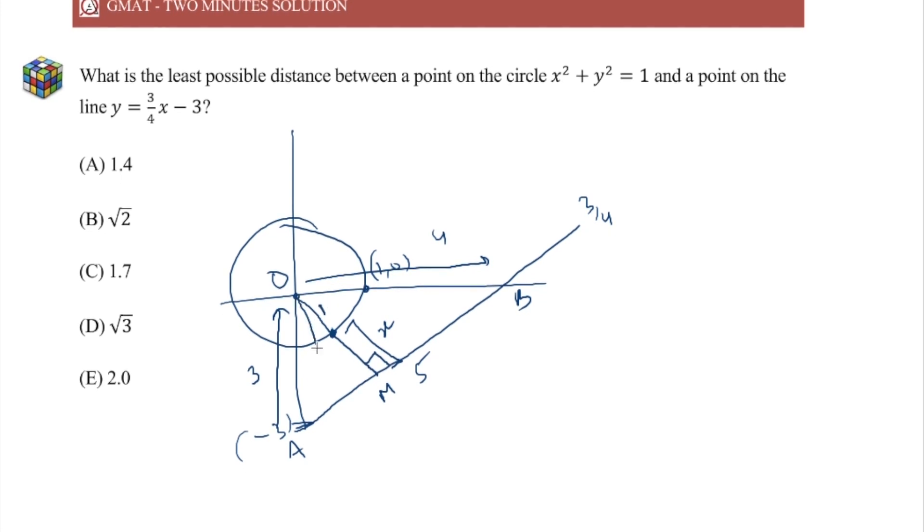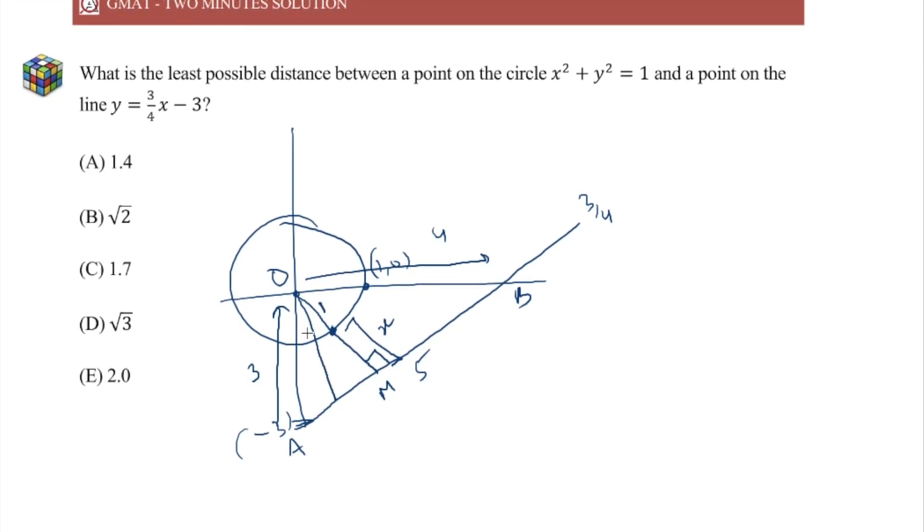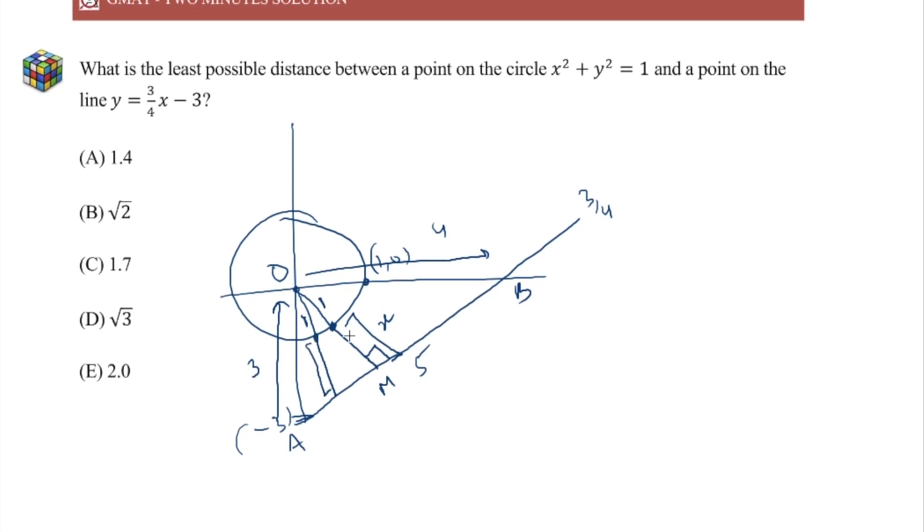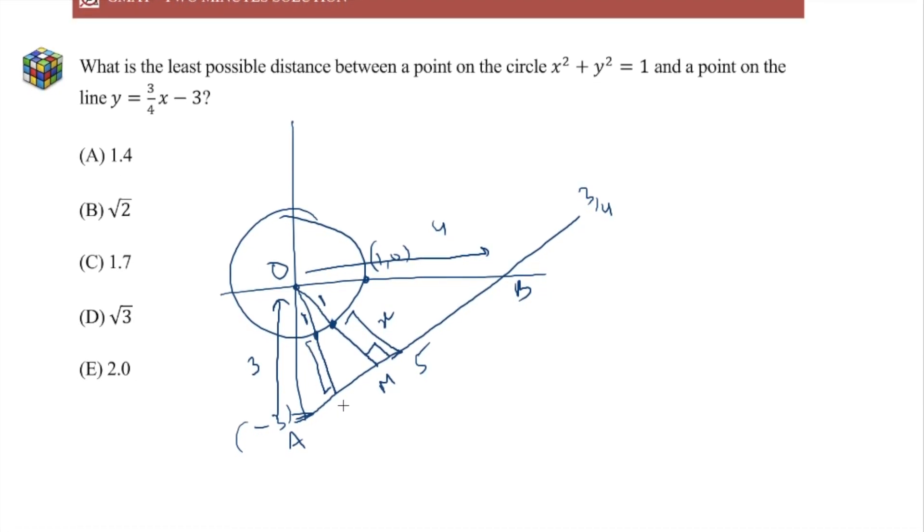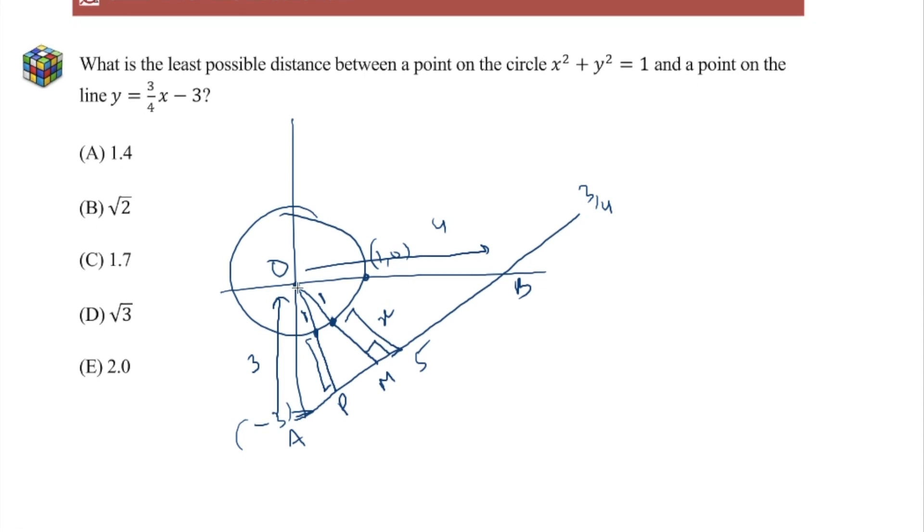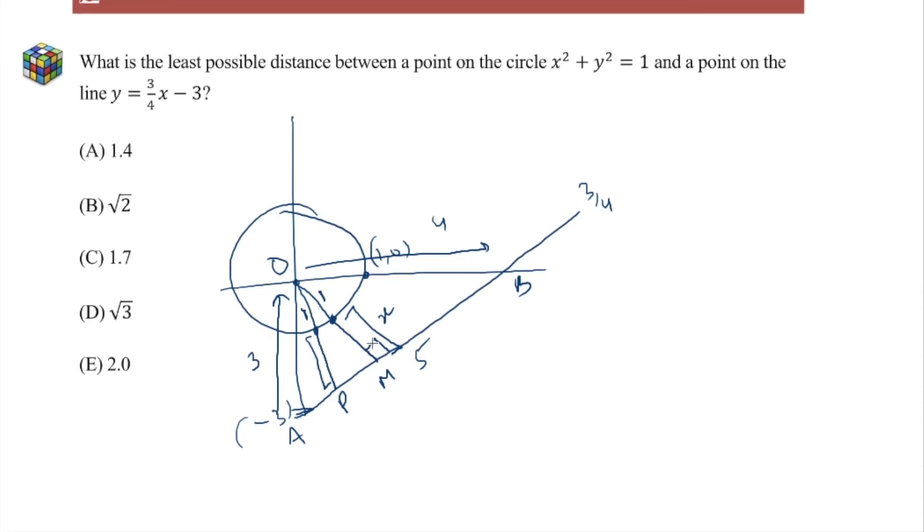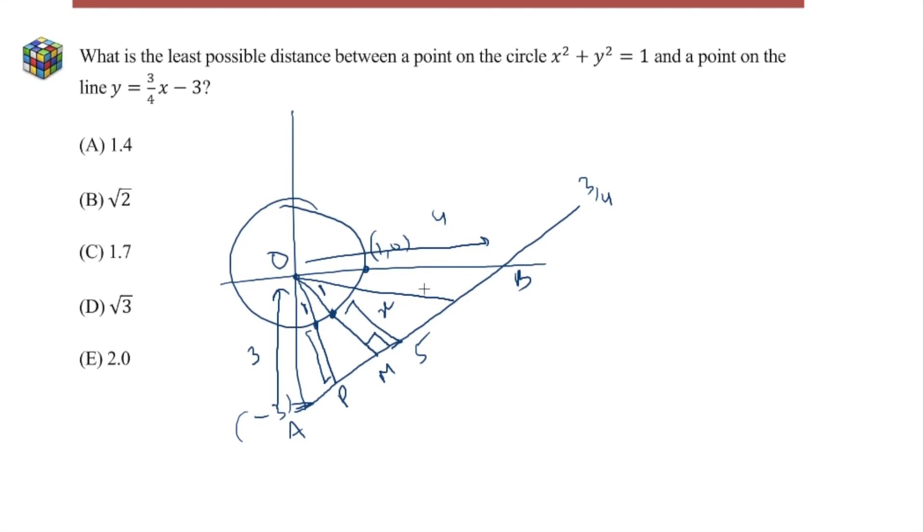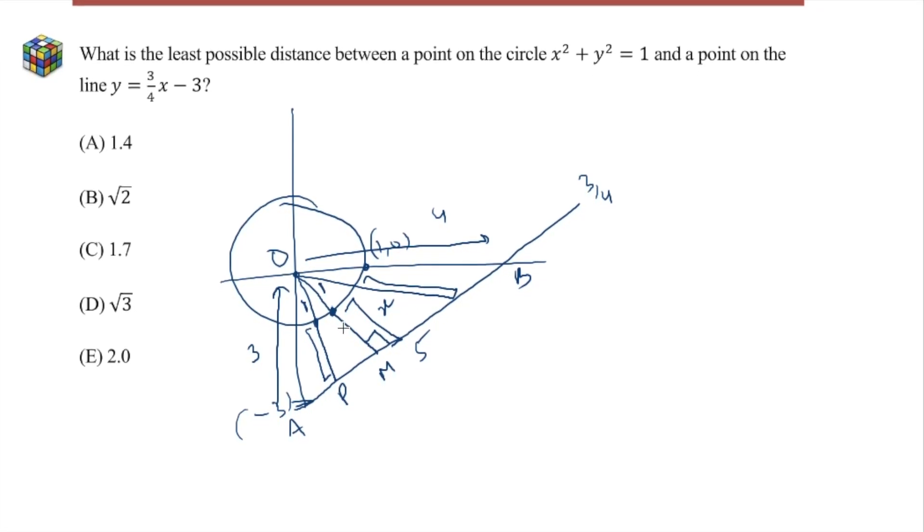Because let's say we draw any other line from O to AB, here the 1 is the same but then this will be greater than x because this line, let's call it OP, will be greater than OM because OM is the altitude, gives us the shortest distance from O to AB. Same will be true for any other line as well, this will be greater than x.